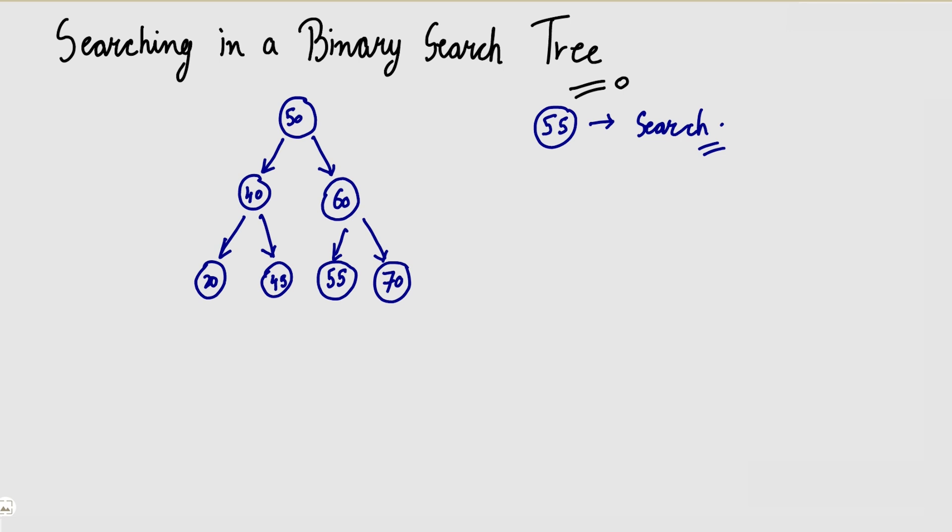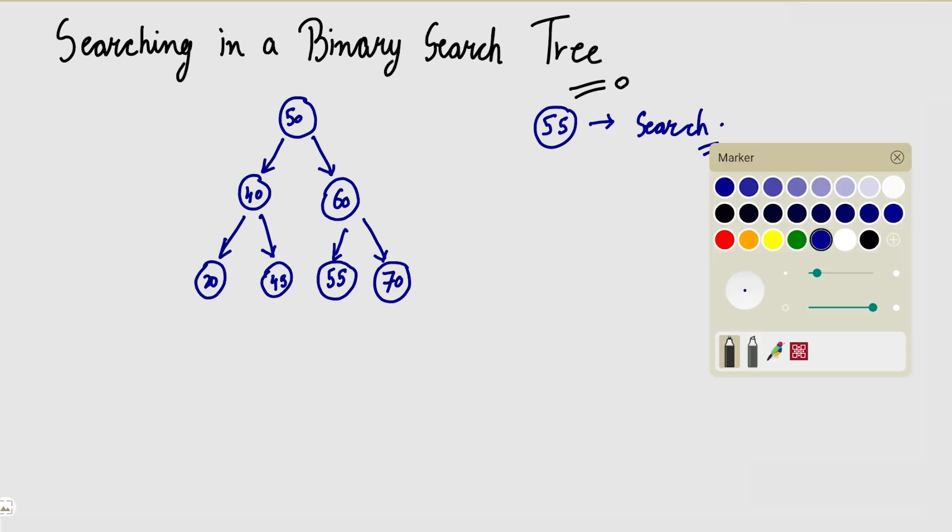Now how is it fast? Look — we have our search space. Every time it converts to n/2. If we had 50 elements first, now we will have 50/2 = 25 elements. So here our search space goes down and down. What is happening? Let me tell you this.